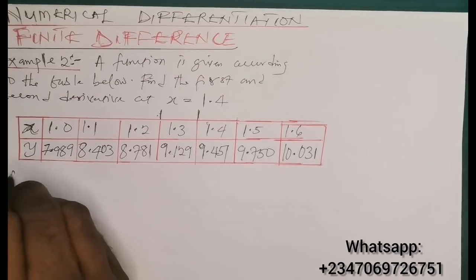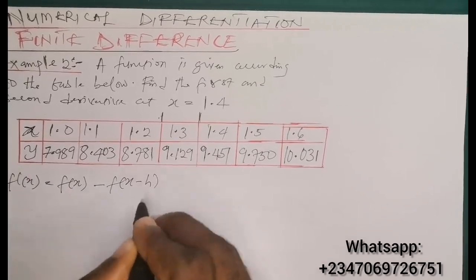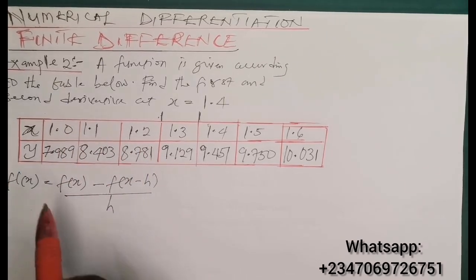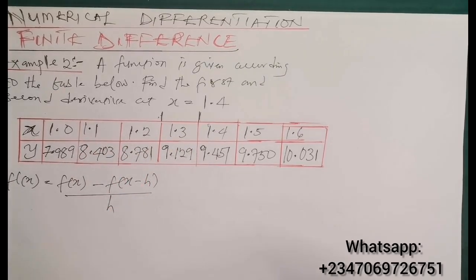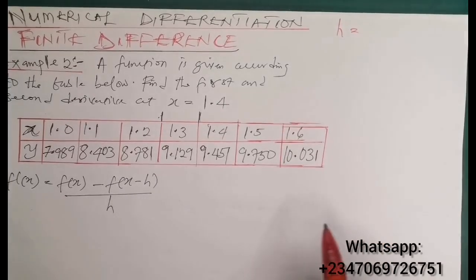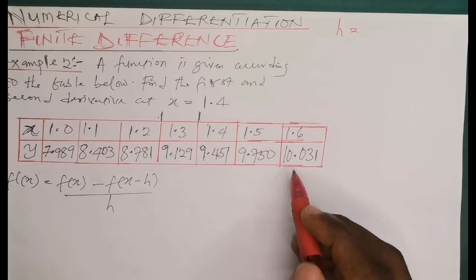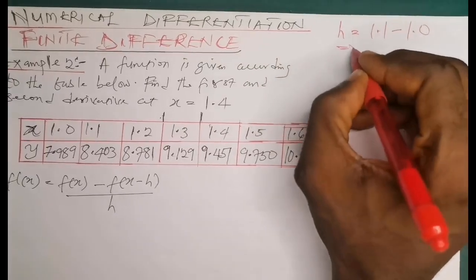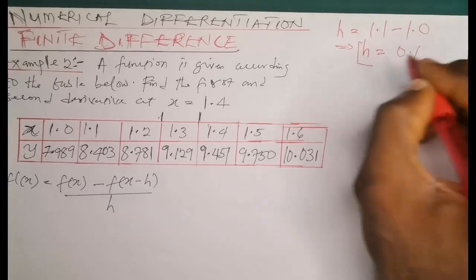For the first derivative using the backward difference method, f prime of x is given as f(x) minus f(x minus h), all over h, where h is the interval. The interval is simply the difference between successive values of x. So h equals 1.1 minus 1.0, which gives h equals 0.1.